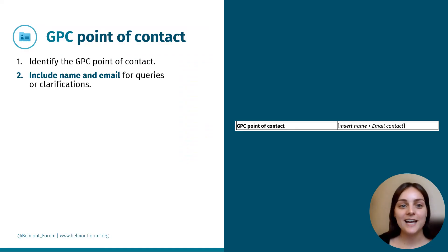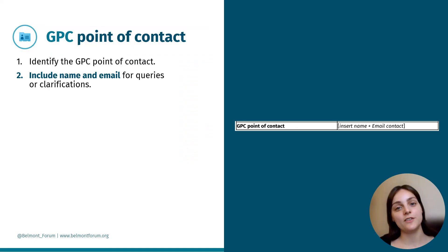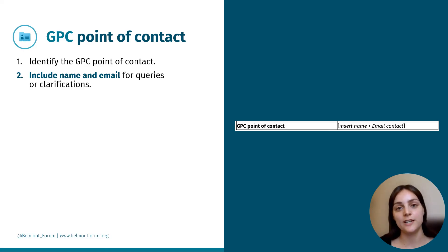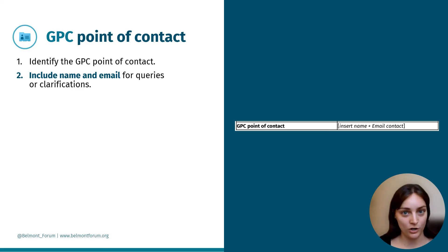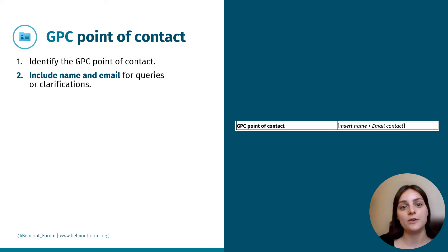Finally, the eleventh box. Here you identify the GPC point of contact. This is where you include the name and email contact, or contacts, for any queries or clarifications.